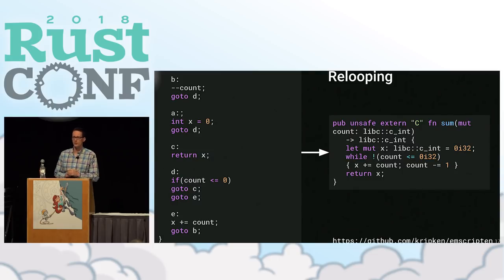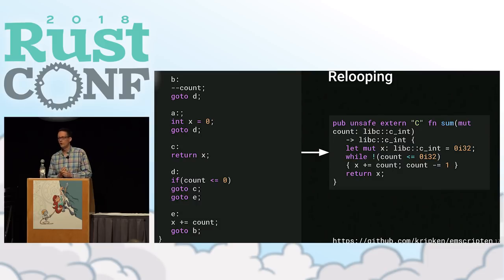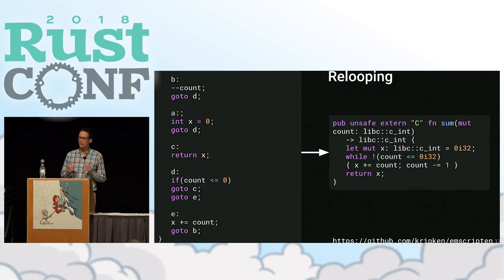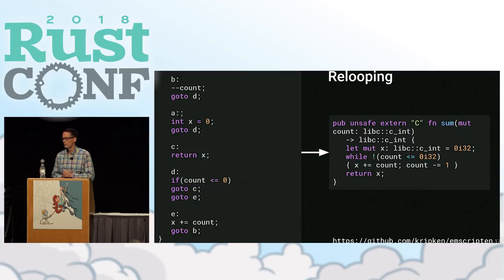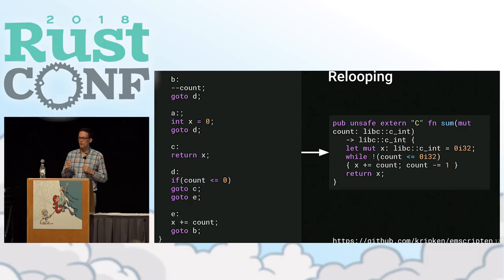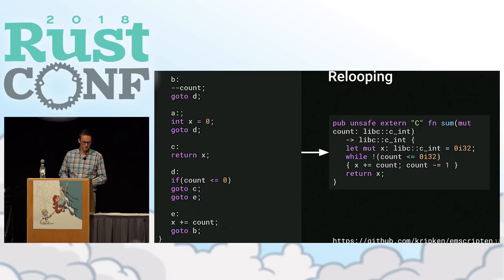Emscripten faced a similar problem in that they're translating LLVM IR into JavaScript code, which also doesn't allow unstructured control flow. We reused Alon's work, but we do a little bit more because we're interested in human consumption of our output — whereas Emscripten just feeds the JavaScript to a compiler and nobody touches it. So we try to preserve comments while relooping and also optimize for readability.